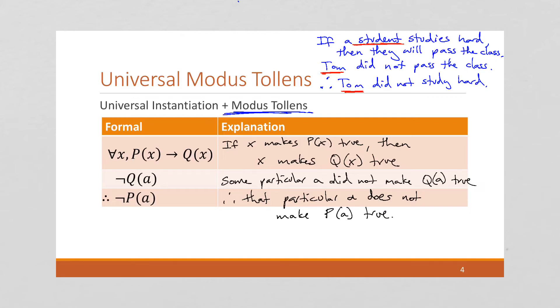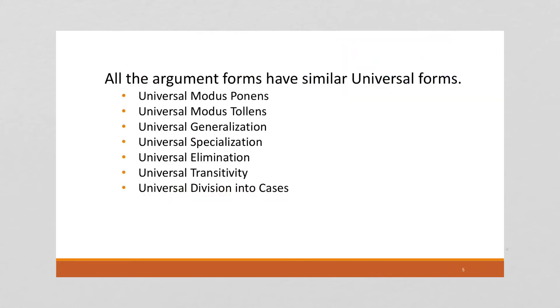Again, we're starting with the general and moving to the specific. So, all the argument forms have similar universal forms. We saw generalization and specialization in the last module, and same with elimination, transitivity, and division into cases. These all have corresponding universal forms. And so do the errors. So, we have the universal converse error and the universal inverse error as well. So, you've got to be on the lookout for those.